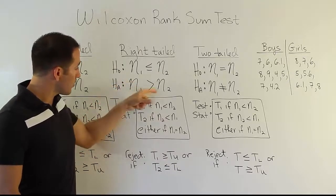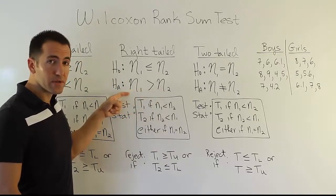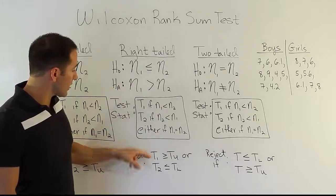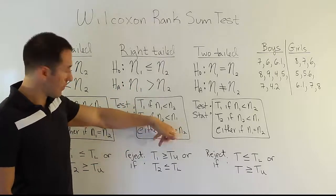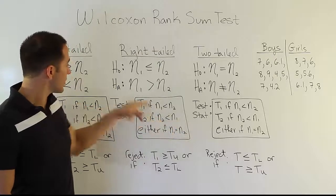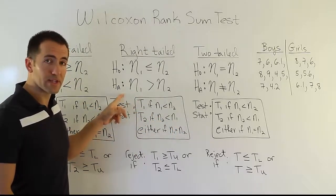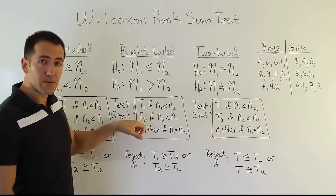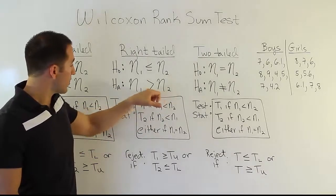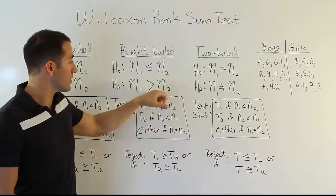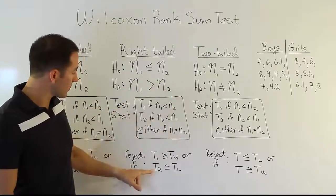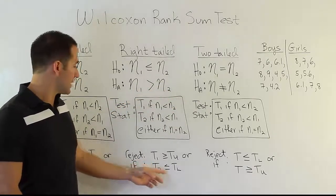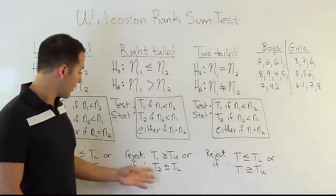What do you need to have happen to support HA in the right-tail case? You need to show that the boys' total is significantly large. So if you're using the boys' value, it has to be greater than the critical value. For T2 using the girls' total, you're showing that their total is smaller than the boys', so you need to show it's significantly smaller — the girls' rank sum should be less than the critical value. If you can show that, you can support HA and reject H0.